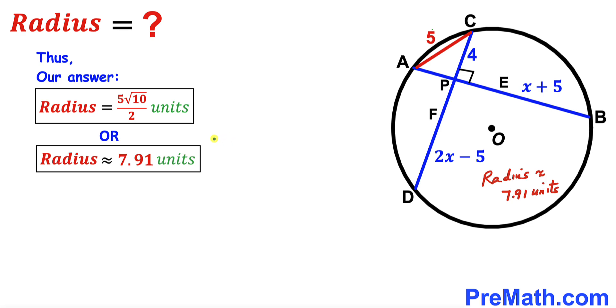So the radius of this circle is approximately 7.91 units, and that's our final answer. Thanks for watching, and please don't forget to subscribe to my channel for more exciting videos.